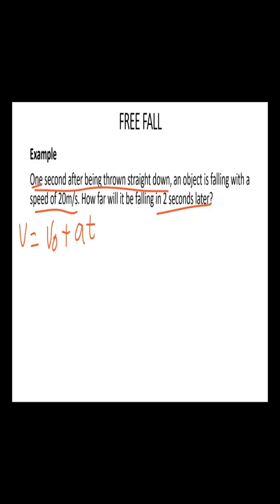So the initial velocity is what we are looking for. For here we have v0. v0 is it falls 20 meters per second, so v0 is negative 20 meters per second.